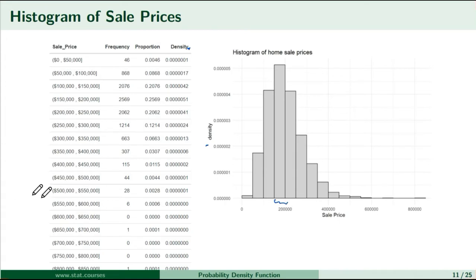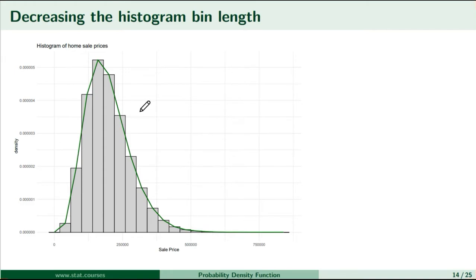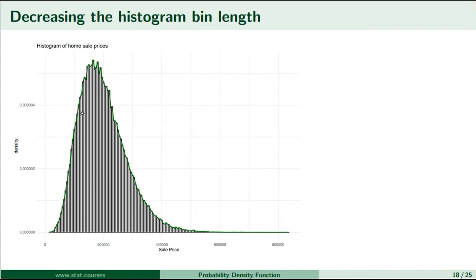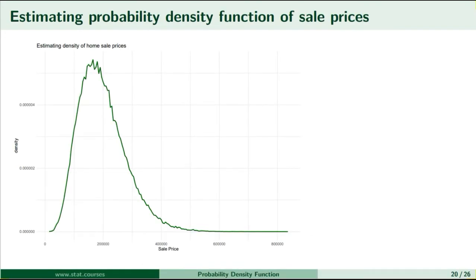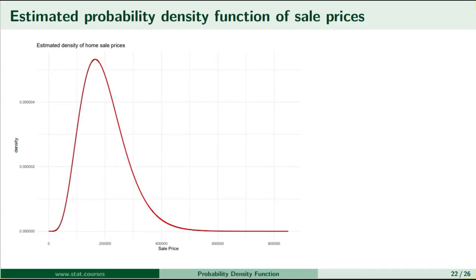Now, let's connect the top center of each of these bars to create a line. As the interval gets smaller and smaller, the height of the bars estimates the relative likelihood of observing a value close to a very specific point. So if we leave only the lines connecting the tops of the bars and remove the bars, we get what resembles a probability density function. You can actually estimate the probability density function to get a smoother curve, and this curve is what we call a probability density function.